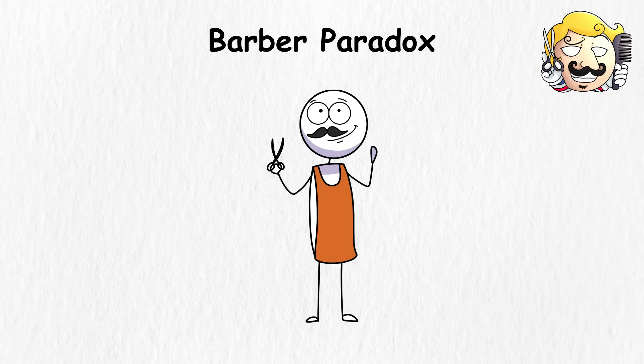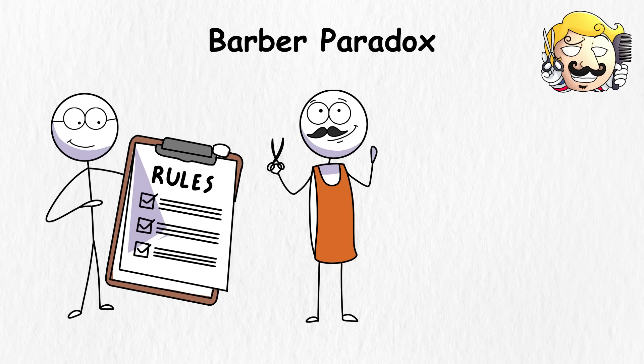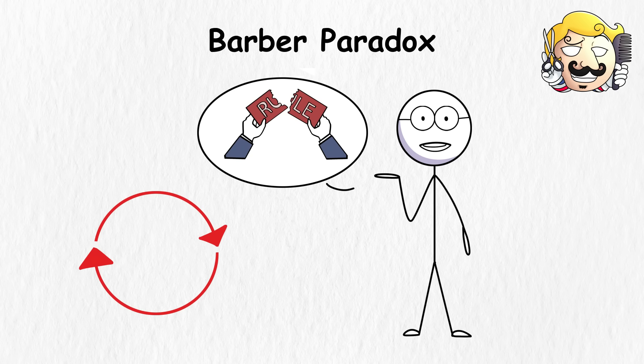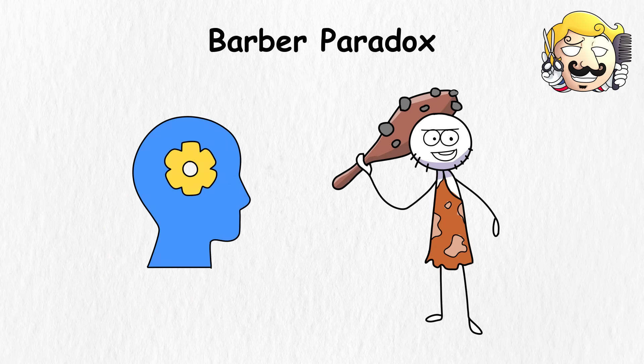The Barber Paradox creates a situation where following the rules forces you to break the rules. But if you don't follow the rule, you also break the rule. This problem leads to a contradictory loop that becomes hard to solve using traditional logical rules.